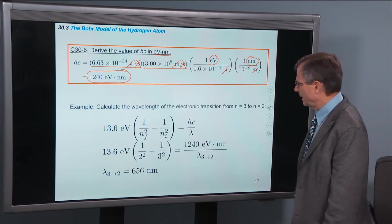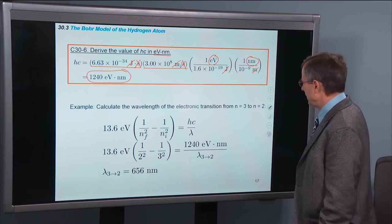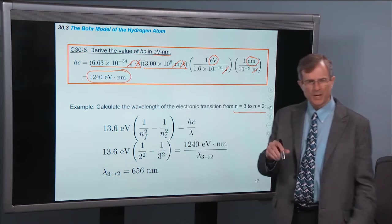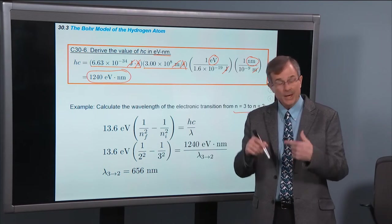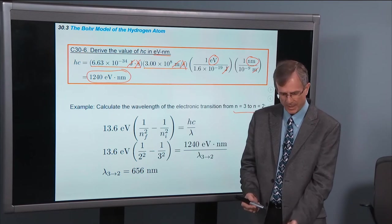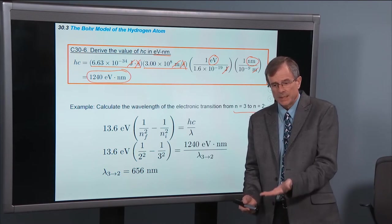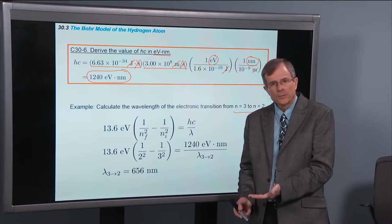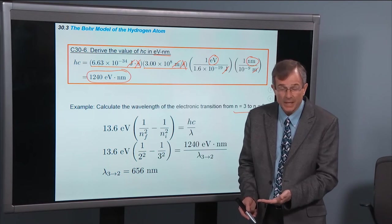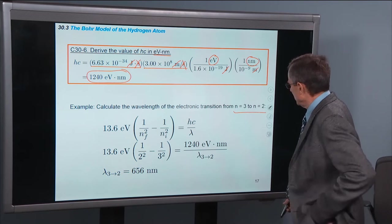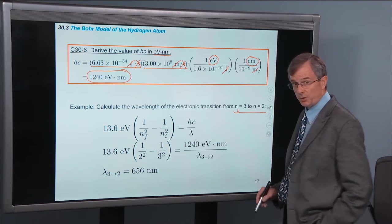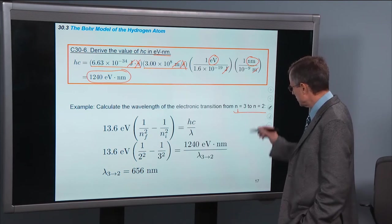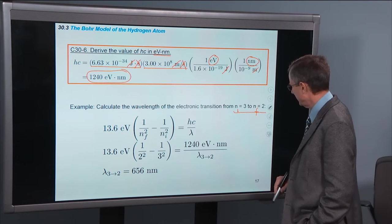So let's do an example for calculating a transition. And in particular, let's do a transition from n equals 3 to n equals 2. Remember we have to start from a higher energy level. And the higher the value of n, the higher the energy level is. Remember that n equals 1 was minus 13.6, and n equals 2 is minus 3.4. We get higher and higher, higher and higher energies for higher and higher values of n. And so I'm going to start off, my initial energy level is 3. And my final energy level is 2.